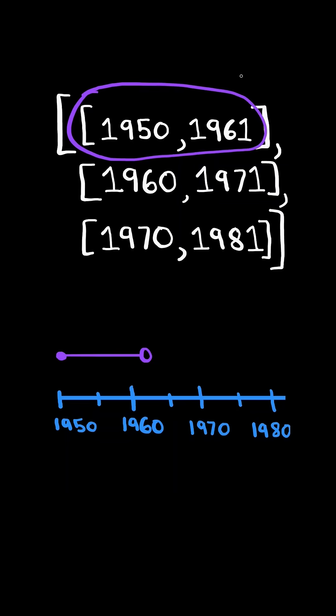Consider a timeline of the person's life. The first person was born in 1950 and died in 1961. Notice we do not include the death year in the timeline, and consider the rest of the people on the timeline.